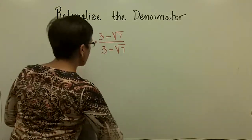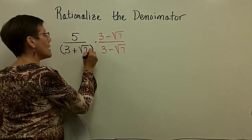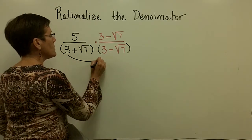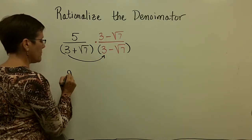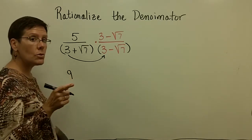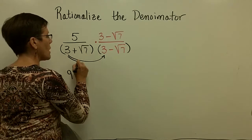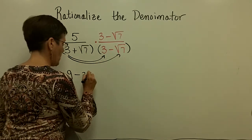Because when we FOIL that denominator, when we take this right here, let's do it down below here and FOIL it - this 3 times 3 is 9. From now on, we won't show these next two steps, but I have a minus sign right here, and 3 times the square root of 7 is 3 times the square root of 7.